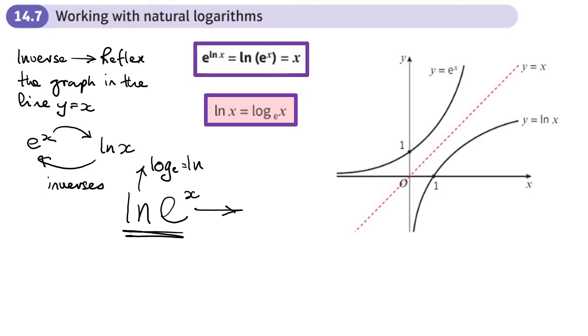The log and e will cancel out just leaving you with x. Or if you have e and it's to the power of log x, they will cancel out again leaving you with x. So what we want to aim to do is to try and get these two together to make them cancel out or these two together like that to make them cancel out.